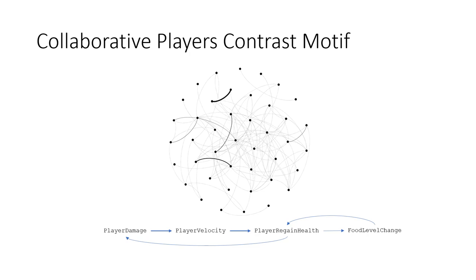Our approach can be used to compare groups of players. In our second experiment, we compared more collaborative players with less collaborative ones. The top graph shows the collaboration graph of players in our dataset. The bottom graph shows the motif graph for highly collaborative players. The pattern is similar to the fight action. No contrast motif was found for less collaborative players.